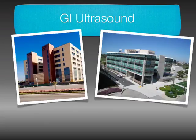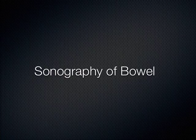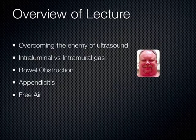We're going to talk now about the ultrasound of the bowel and then move into the gallbladder. Normally when you talk about ultrasound of the bowel, people go: there's air in the bowel — air is the enemy of ultrasound, you can't use ultrasound for the bowel. But actually there's a lot of things you can see with ultrasound of the intestines. You need to learn how to overcome the enemy, which is the bowel gas, and sometimes it's pretty significant.